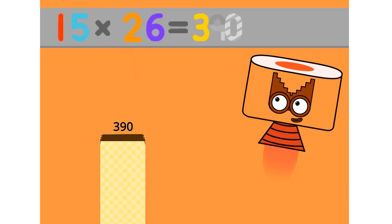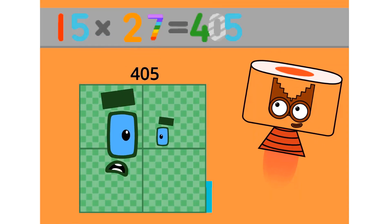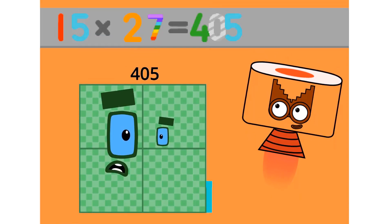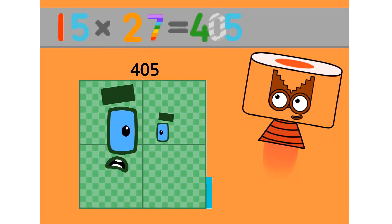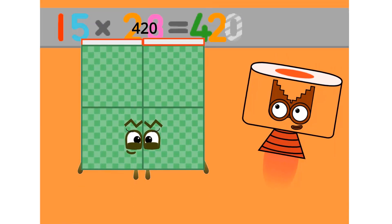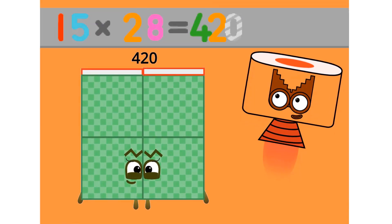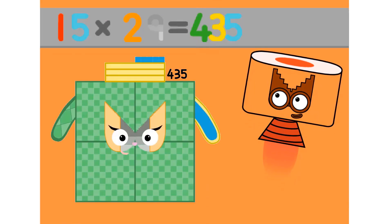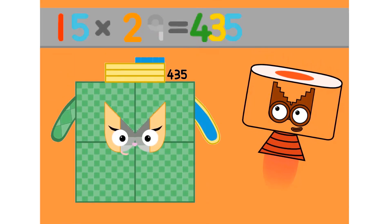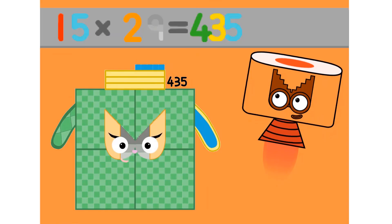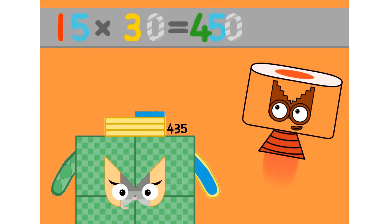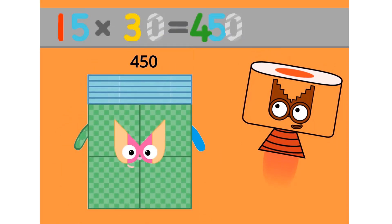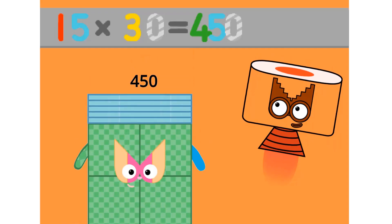15 x 23 equals 345. 15 x 24 equals 360. 15 x 25 equals 375. 15 x 26 equals 390. 15 x 27 equals 405.